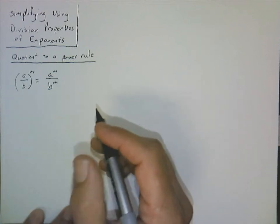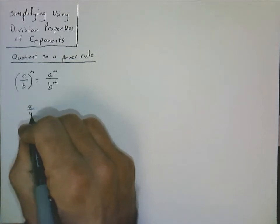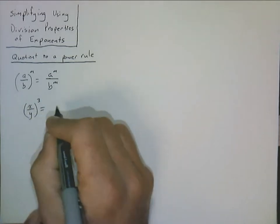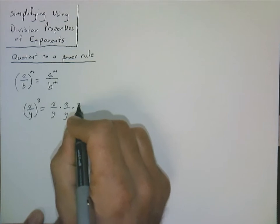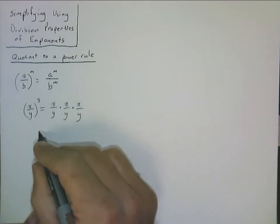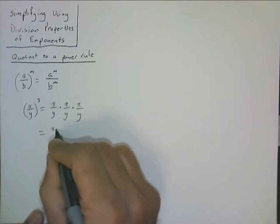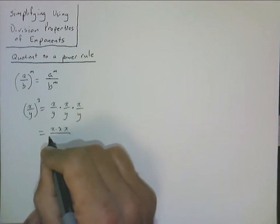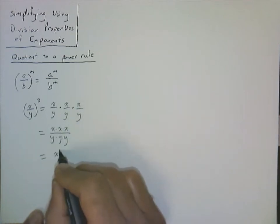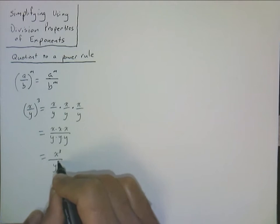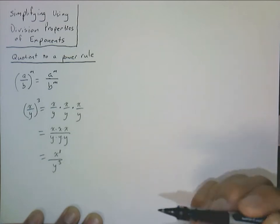It's nothing to memorize. If you forget how this works, just work through a simple example like x over y to the power of 3. That's just x over y times x over y times x over y. When multiplying fractions, we multiply the numerators together and the denominators together, giving us x times x times x over y times y times y, which is x cubed over y cubed. So the exponent gets sent into both the numerator and the denominator.